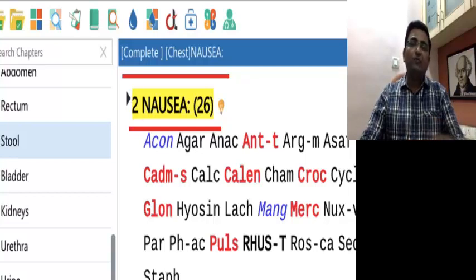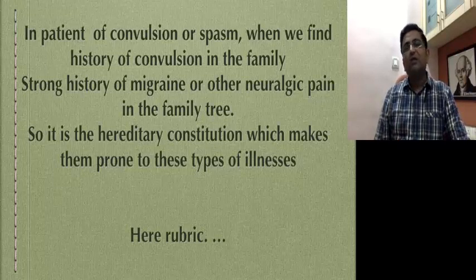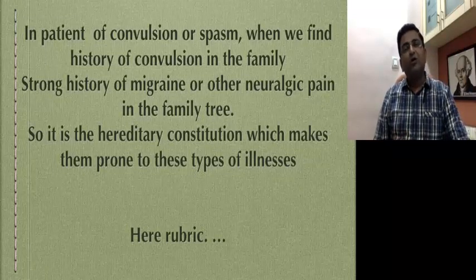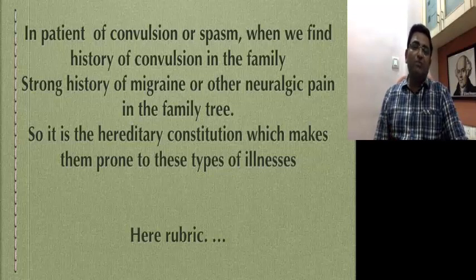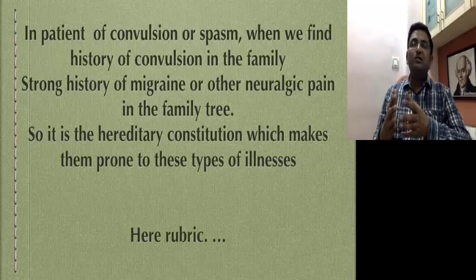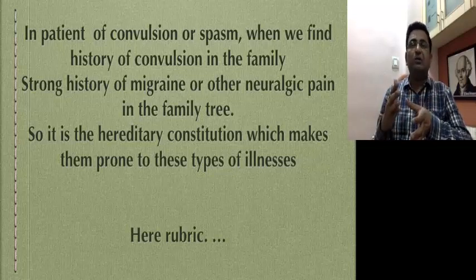You go into the depth of the symptom. You ask: tell me from where you feel the nausea. In a patient of convulsion or spasm, when we find history of convulsion in the family, with a strong history of migraine or other neurological pain in the family tree — it is the hereditary constitution which makes them prone to this type of illness. Generally, we are only considering what are the types of convulsion, where you find aggravation, and amelioration.